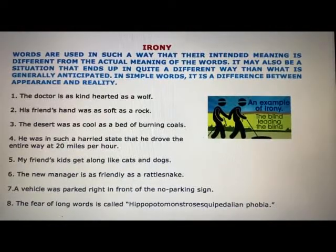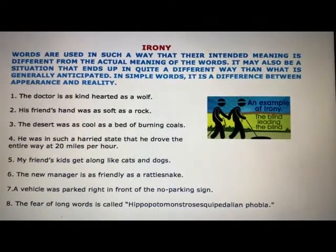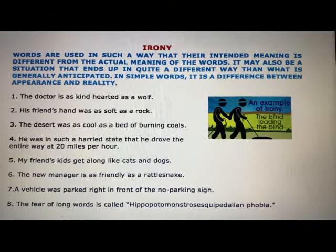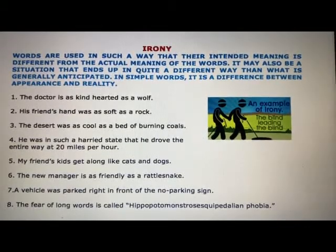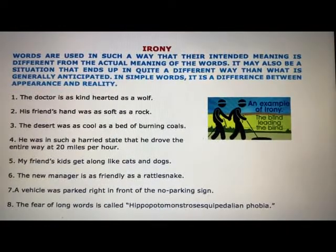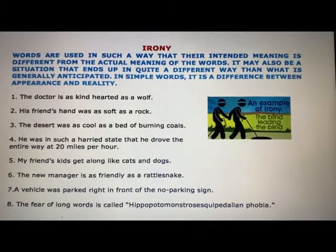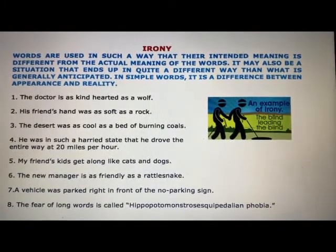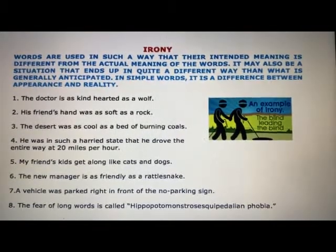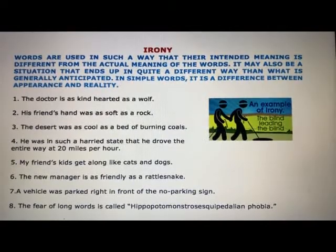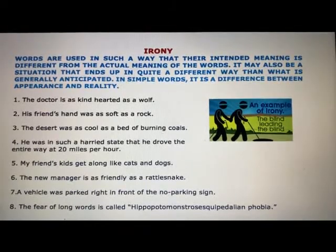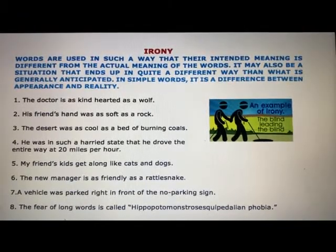The next poetic device is irony. Here, words are used in such a way that their intended meaning is different from the actual meaning of the words. It may also be a situation that ends up in quite a different way than what is generally anticipated. In simple words, it's a difference between appearance and reality. For example: 'The doctor is as kind-hearted as a wolf.' 'His friend's hand was as soft as a rock.' You can pause the video and go through the examples to find how irony is used.